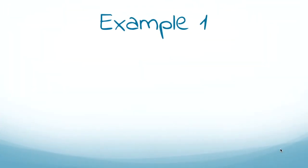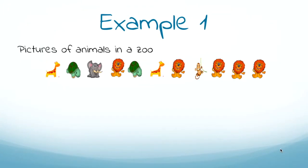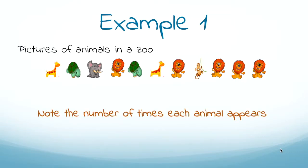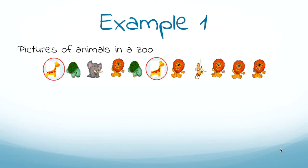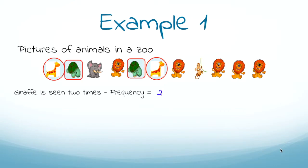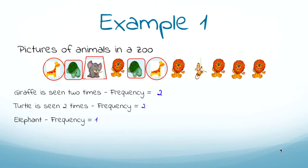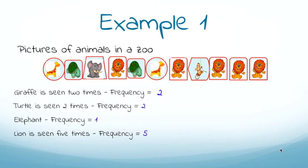Now that we have seen what frequency is, let's look at an example. We are given pictures of animals and have to figure out how many times each animal appears. The giraffe appears two times, so its frequency is two. The turtle appears two times, so its frequency is also two. The elephant appears once, so its frequency is one. The lion appears five times, so its frequency is five. Lastly, the monkey shows up one time.